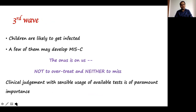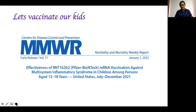The third wave is ongoing and a few children may develop MIS-C. But the onus is on us — the pediatricians — not to overtreat and not to miss. Clinical judgment with sensible usage of available tests is of paramount importance. Can we prevent MIS-C? Let's vaccinate our children. Vaccination has been started for children between 15 to 18 years, and there are recent reports from the US showing that vaccination across 24 hospitals in 20 states protects to a certain degree against MIS-C. The only way forward is to prevent COVID infection through vaccination, and not to over-treat with steroids. Thank you for watching. Take care. Stay safe.